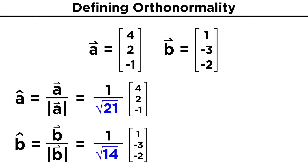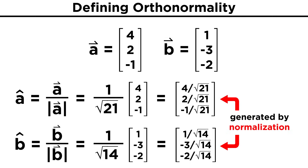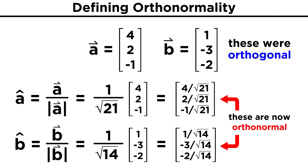Now we can divide vectors a and b by the lengths we just calculated, and we get new unit vectors (4, 2, -1)/√21 and (1, -3, -2)/√14. The word 'unit' means that they have lengths equal to one. This process of making vectors into unit vectors is often called normalization. By doing this, we have only changed the magnitude of the vectors, not the direction. Because of this, they are still orthogonal as we previously verified, and since these two vectors are orthogonal and have lengths equal to one, that makes them orthonormal as well.